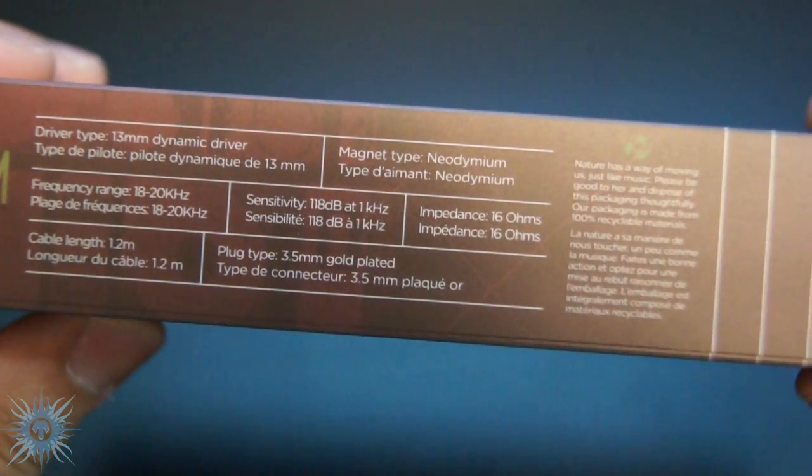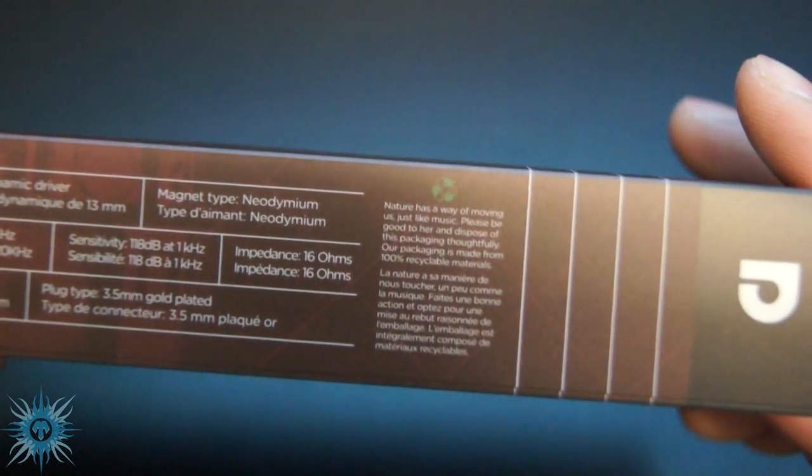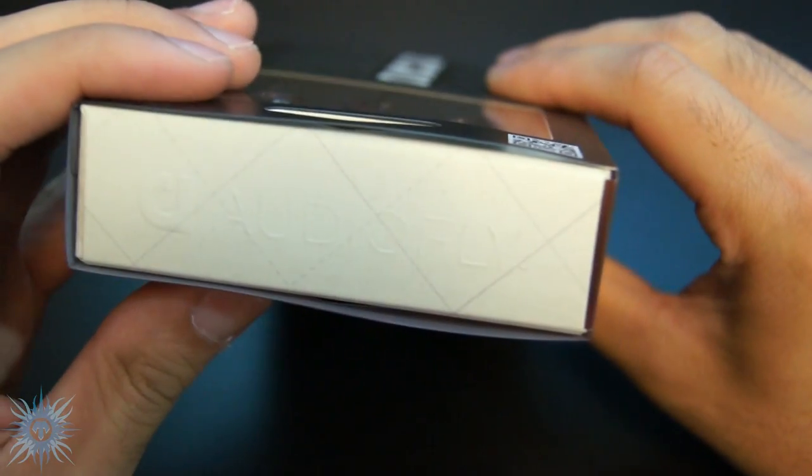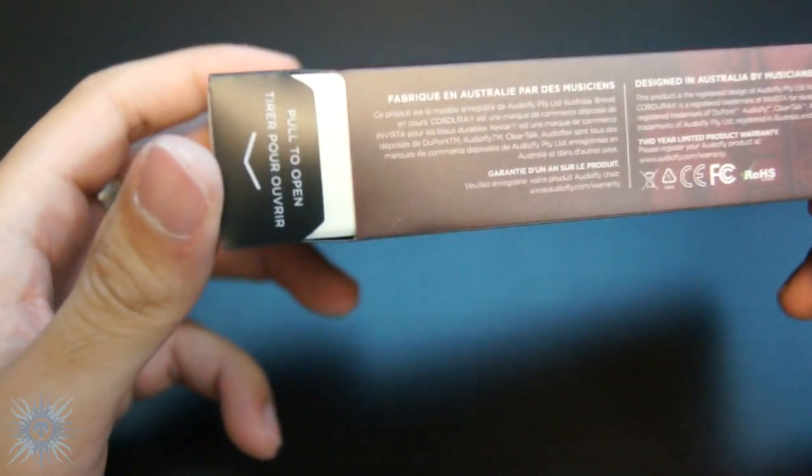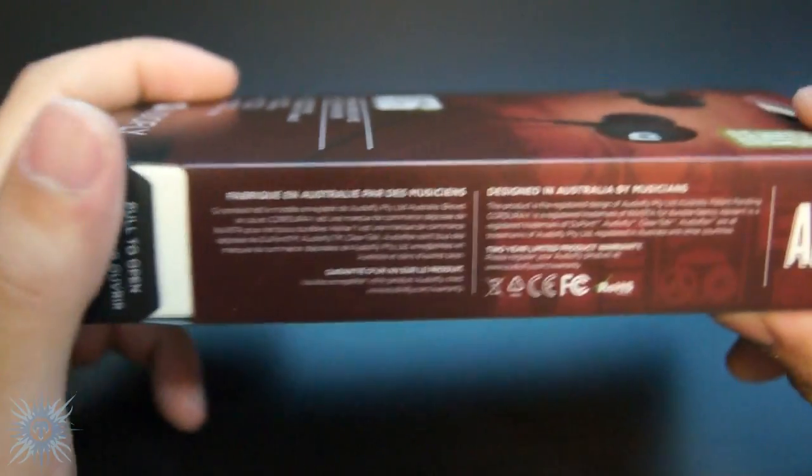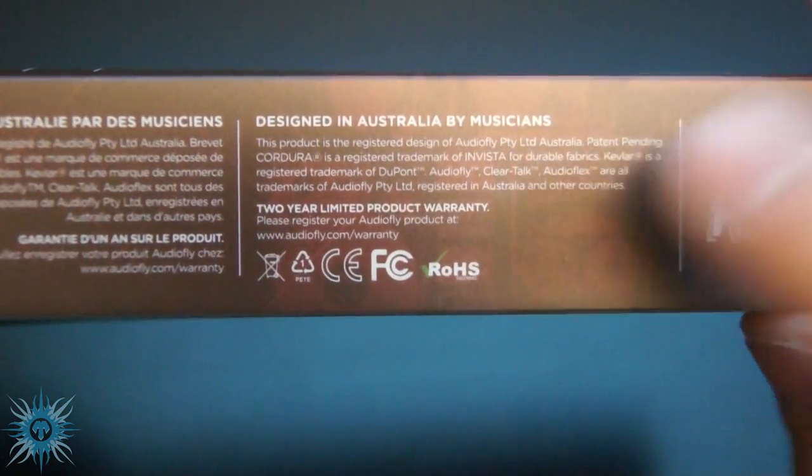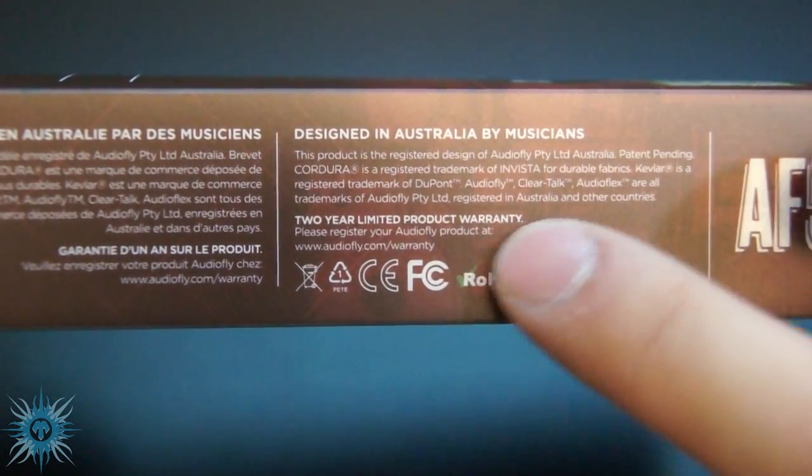And besides the tech specs, AudioFly does make sure to use 100% recyclable materials for their packaging, which a lot of companies do tend to overlook. It's hard to see, but the top has an embossed AudioFly logo, and the right side has a pull tab to get into the box, along with text letting you know they were designed in Australia and have a two-year product warranty.